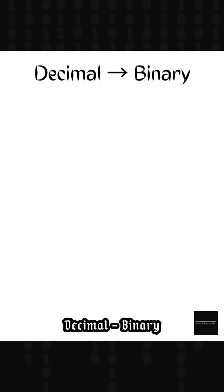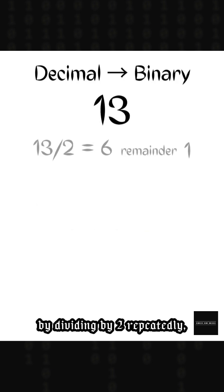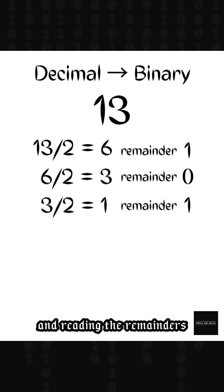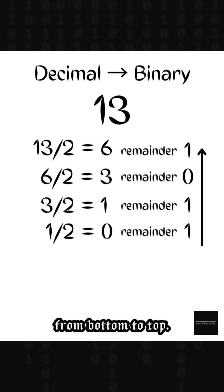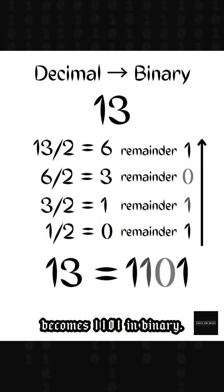Decimal to binary. Decimal numbers are converted by dividing by 2 repeatedly and reading the remainders from bottom to top. Example: 13 in decimal becomes 1, 1, 0, 1 in binary.